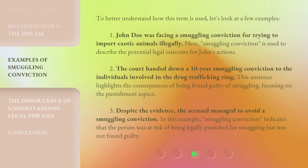To better understand how this term is used, let's look at a few examples. John Doe was facing a smuggling conviction for trying to import exotic animals illegally. Here, smuggling conviction is used to describe the potential legal outcome for John's actions. The court handed down a 10-year smuggling conviction to the individuals involved in the drug trafficking ring. This sentence highlights the consequences of being found guilty of smuggling, focusing on the punishment aspect.